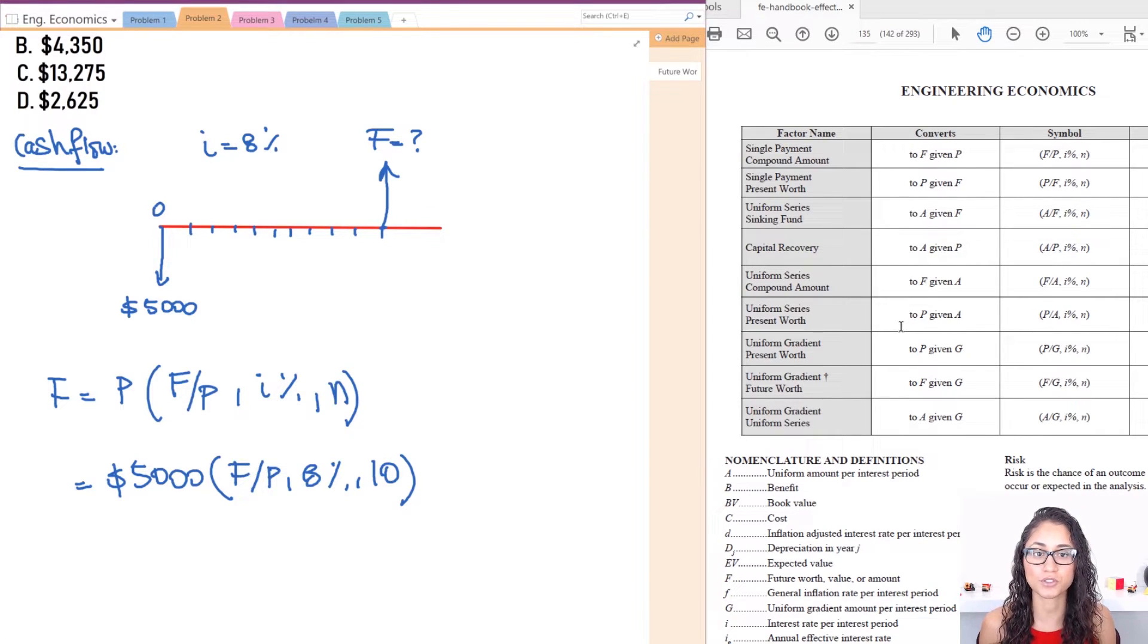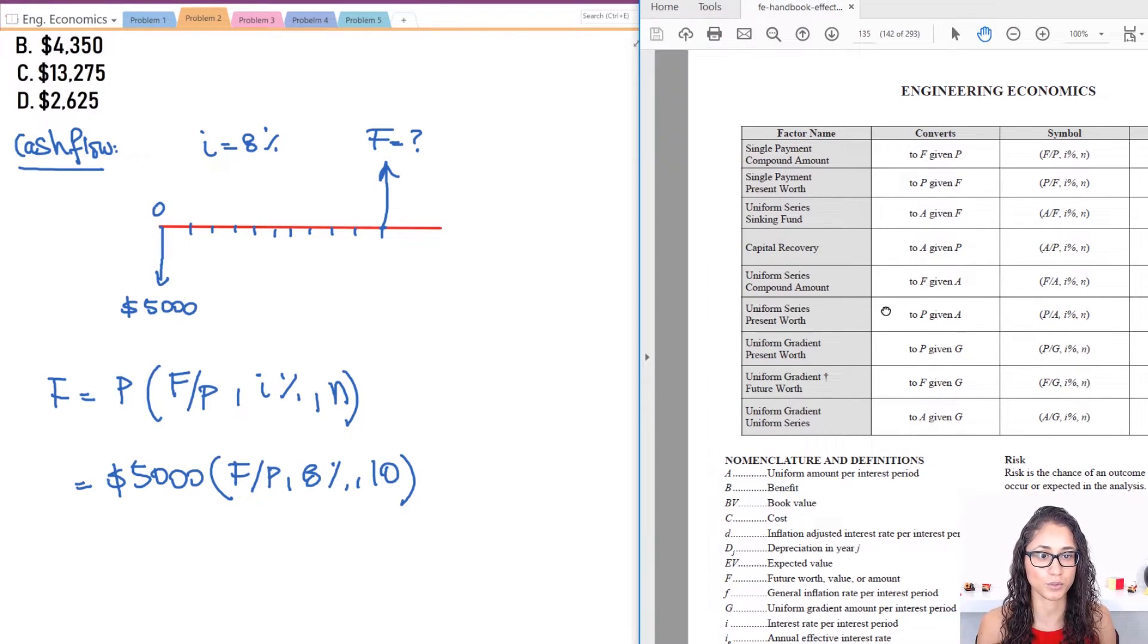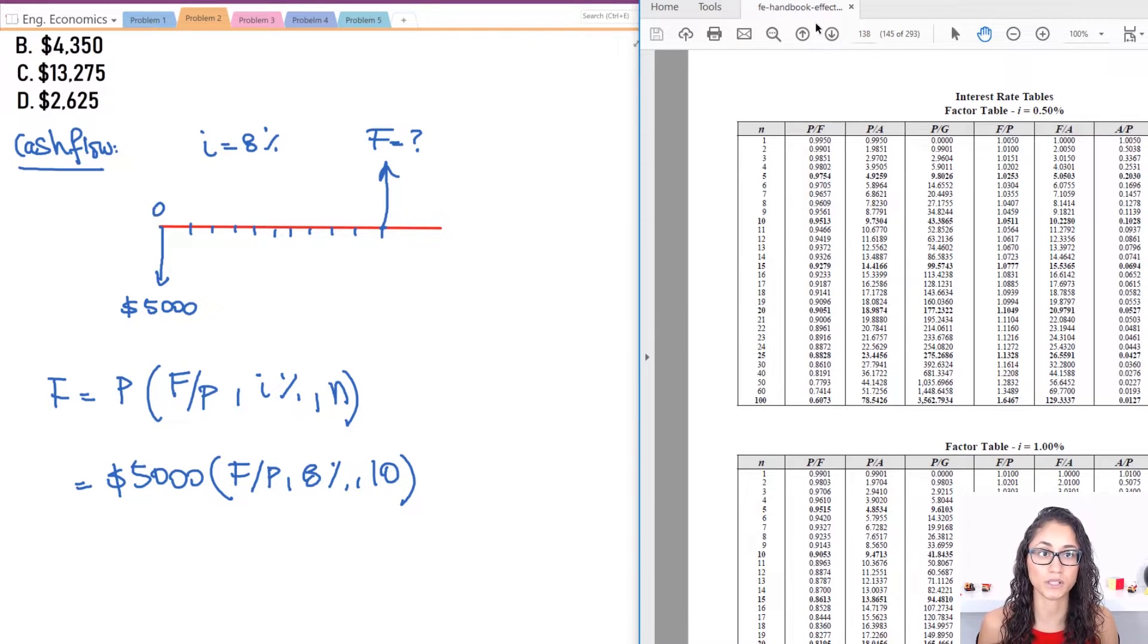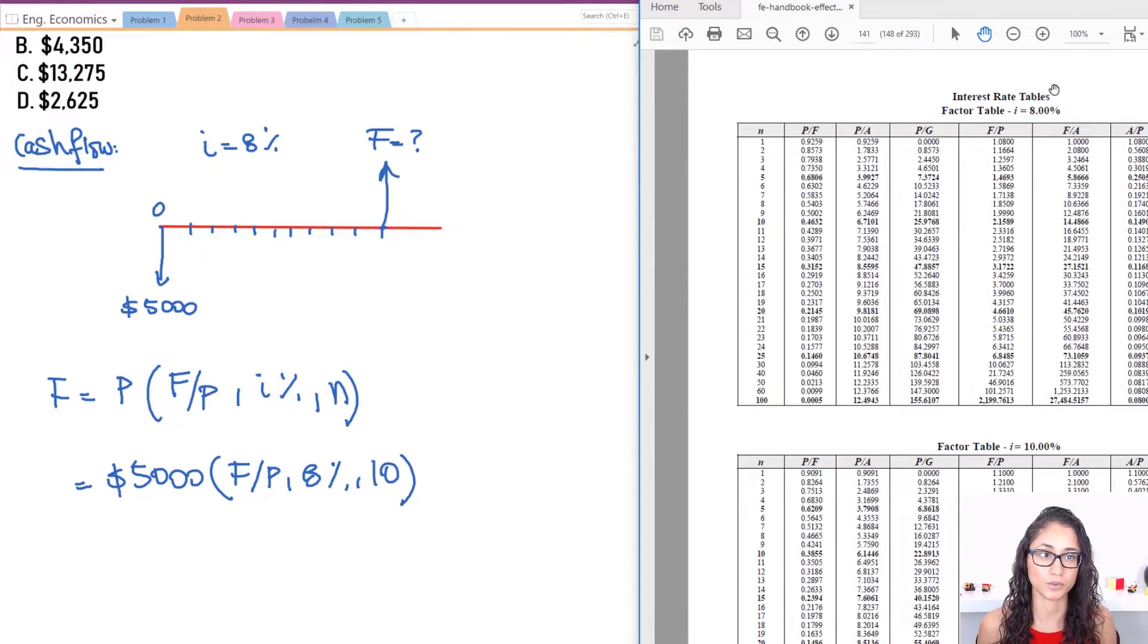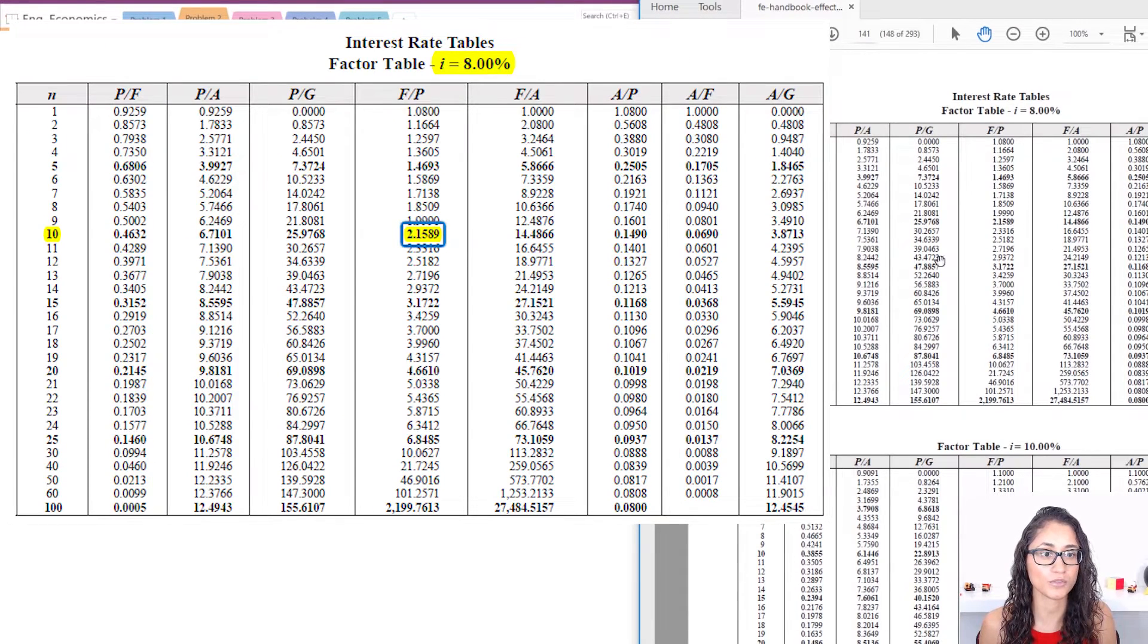So the next thing we're going to do is go to the table. So let me show you the tables. They're on page 138. Now this table right here, as you can see, you're given the interest rate which is 0.5%. We actually need the 8%, so we're going to keep going. So that's 8%. Number of years is 10 and as you can see you're given all the terms here. So that's what I was talking about earlier. We're looking for F/P, so F/P is here and n is 10, so the value is 2.1589.